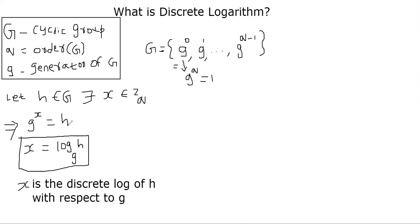So what is discrete logarithm then? x is called the discrete logarithm of h with respect to base g. That's how we define discrete logarithm.